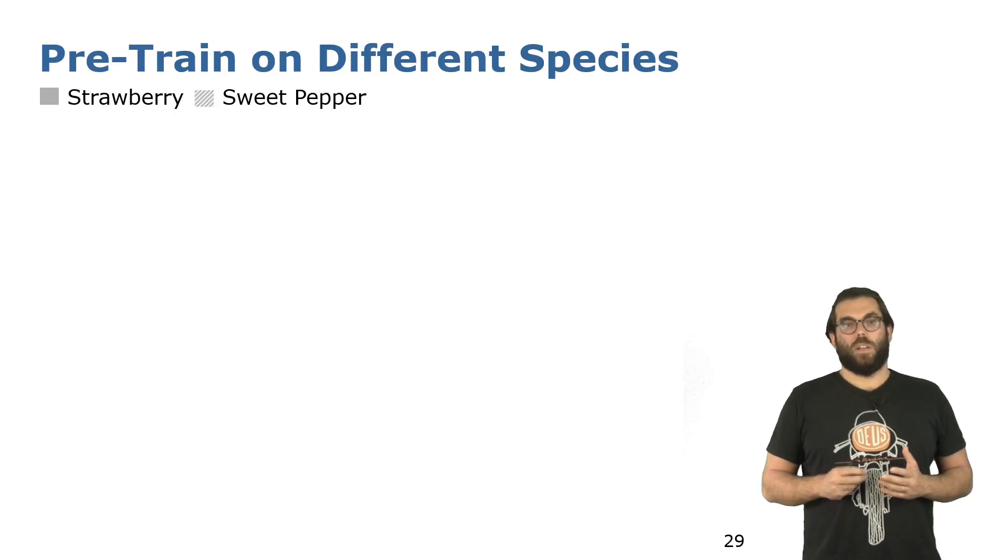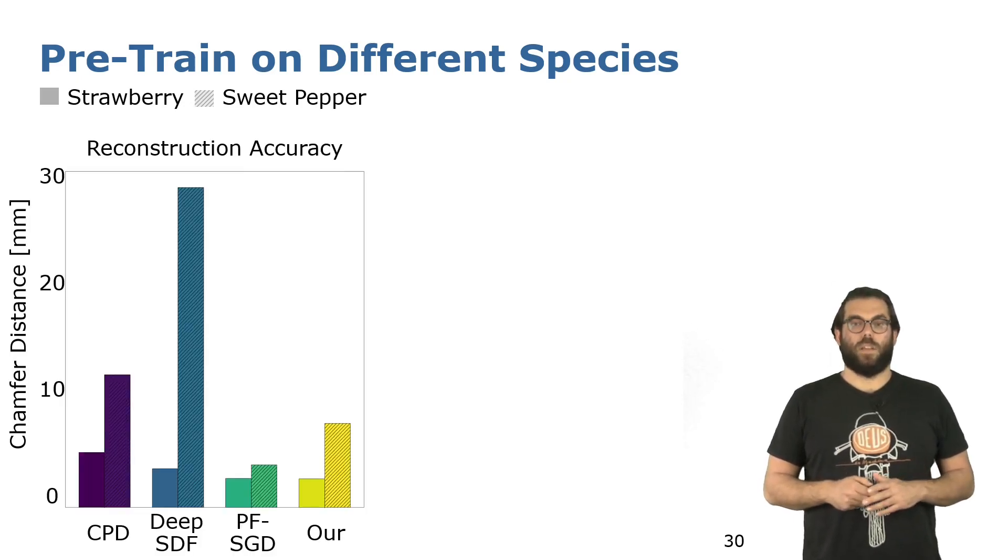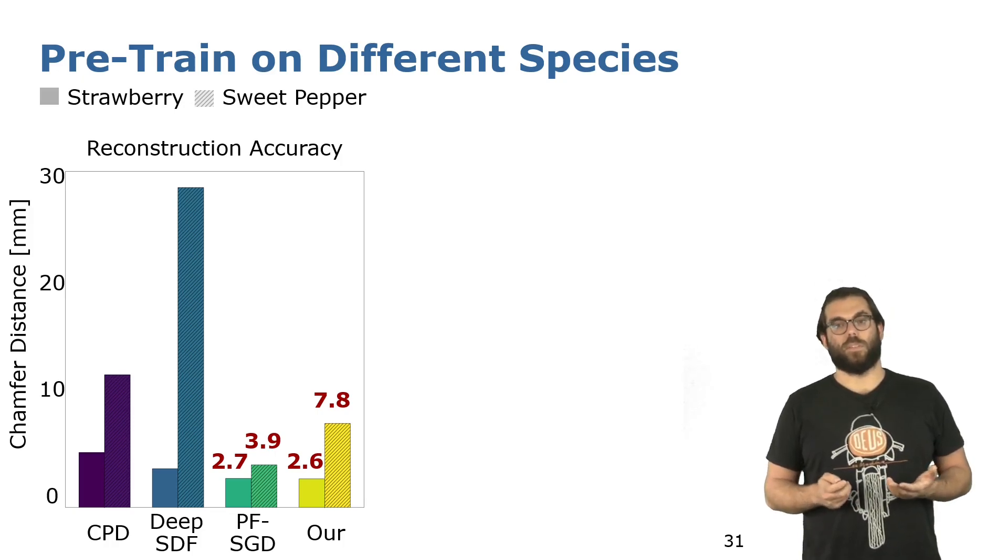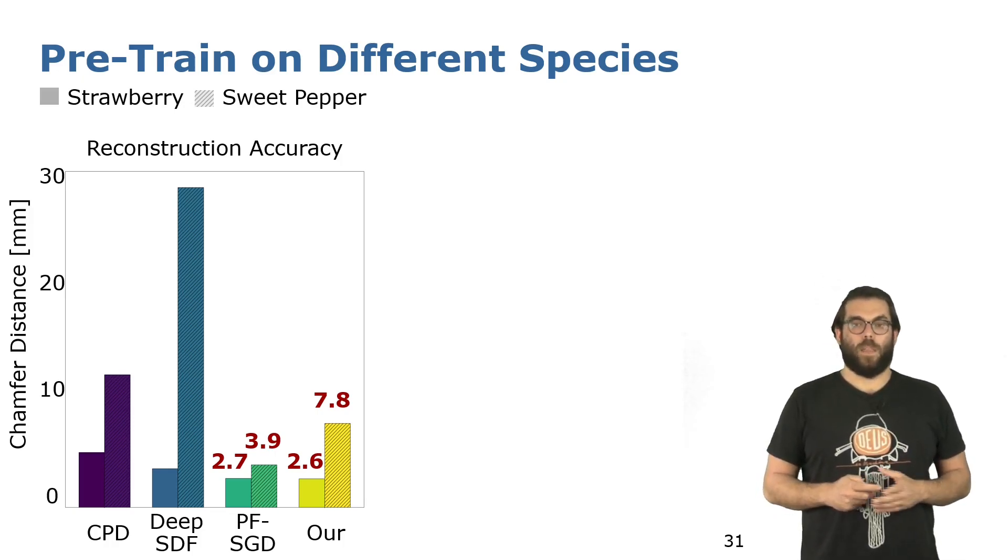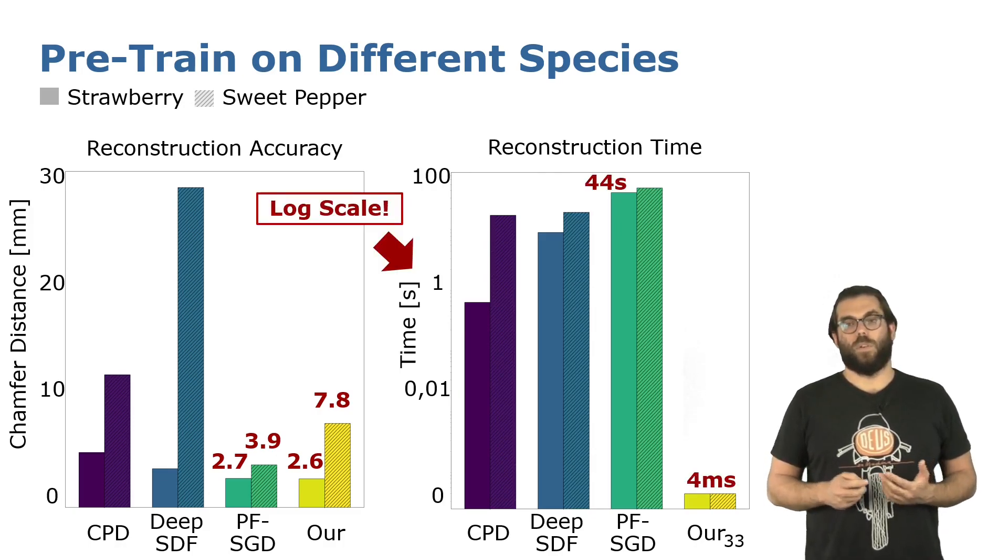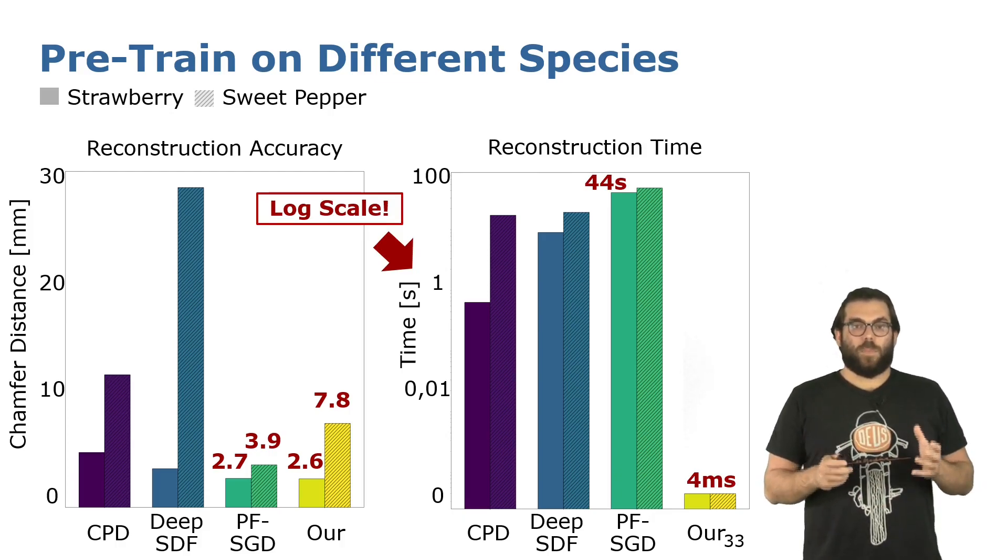Now let's look at some results. As mentioned before, we have used two datasets: strawberry and sweet peppers. In the following, you will see the results when the pre-training and the actual training have been done using the same species. As you can see here on the left, our approach is comparable with the best baseline for the strawberry and is slightly worse for the sweet pepper in terms of reconstruction accuracy, which is modeled by the Chamfer distance. The good news is that while the best baseline needs 40 seconds to compute a complete prediction, our approach only needs 4 milliseconds. This means our approach can be used online on robots operating in the field.